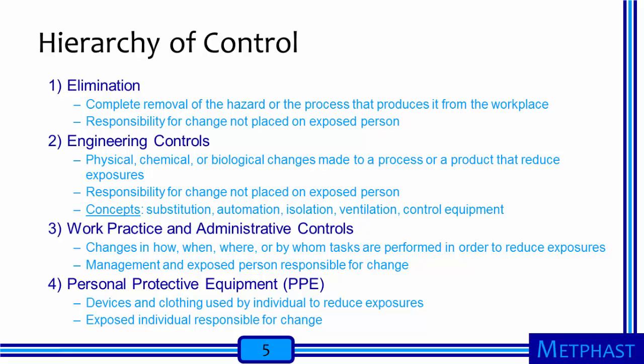Elimination can be defined as the complete removal of the hazard or process that produces it from the workplace. It is at the top of the hierarchy because it completely eliminates the exposure while placing the responsibility for change on someone other than the exposed person. Engineering controls are physical, chemical, or biological changes made to a process or product that reduce exposures. Like elimination, engineering controls are relatively high on the hierarchy because the responsibility for change is not placed on the exposed person. Among the concepts used in engineering controls are substitution, automation, isolation, ventilation, and control equipment.